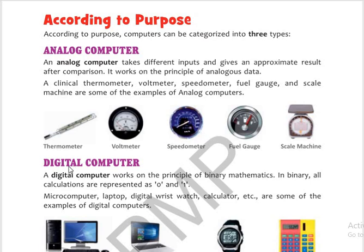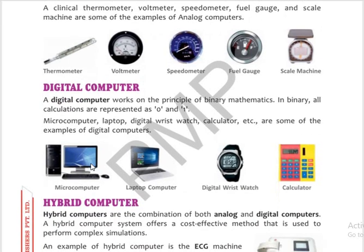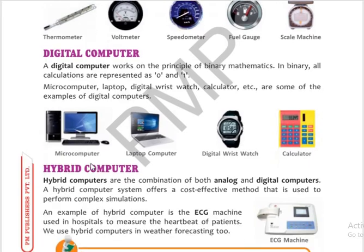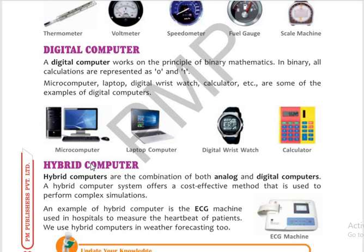Moving to the next point: digital computers. You are very familiar with this word because nowadays everything is digital — computers, laptops, malls, digital payment, Digital India. A digital computer works on the principle of binary mathematics. Binary means 0 and 1. All calculations are represented as 0 and 1. Whatever you type, for example the letter A, it is converted into binary language of 0s and 1s, which the computer understands, processes, and then gives us the output as 'A'.